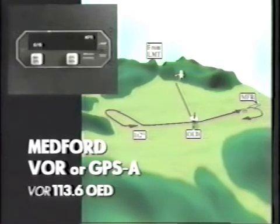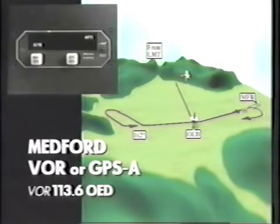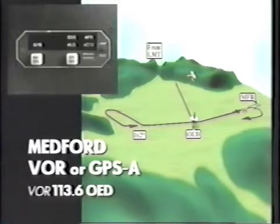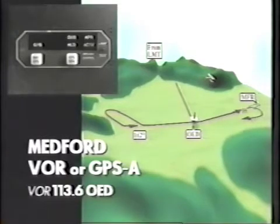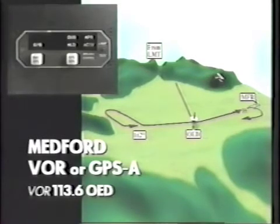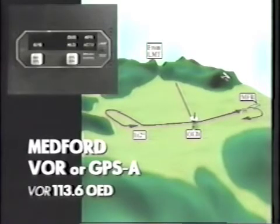Just before you reach OED, the approach active enunciator signals a CDI sensitivity change. As you cross the final approach fix at OED, the approach active enunciator lights solid, indicating that you may continue the approach to the missed approach point. The OBS hold goes on hold again, and you are prompted to turn to your final course to Medford.